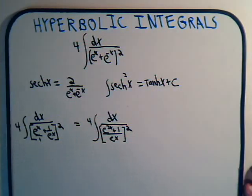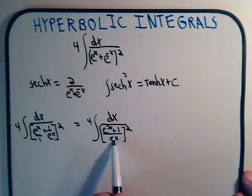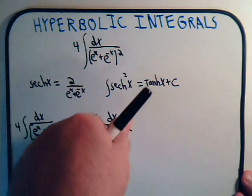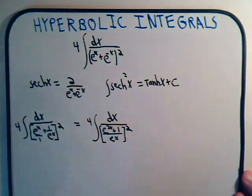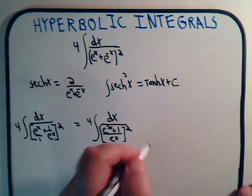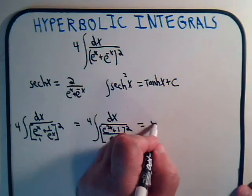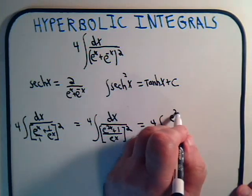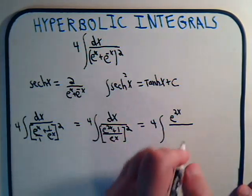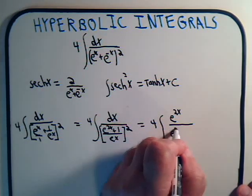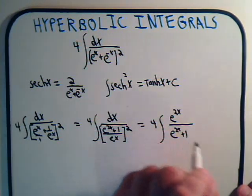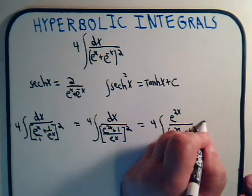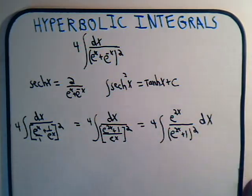Squaring that gives us e to the 2x down here in the denominator, which we can take upstairs into the numerator by taking the reciprocal and multiplying. And so that would give us 4 times the integral of e to the 2x divided by the quantity e to the 2x plus 1, squared, dx.